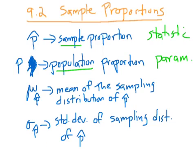Sigma of p-hat is the standard deviation of all the possible p-hats — it's the standard deviation of the sampling distribution of p-hat. Notice I made a little mistake right here, sorry about that. These are going to be the really important symbols, and it's confusing because the mean of all possible p-hats — that's what that means.